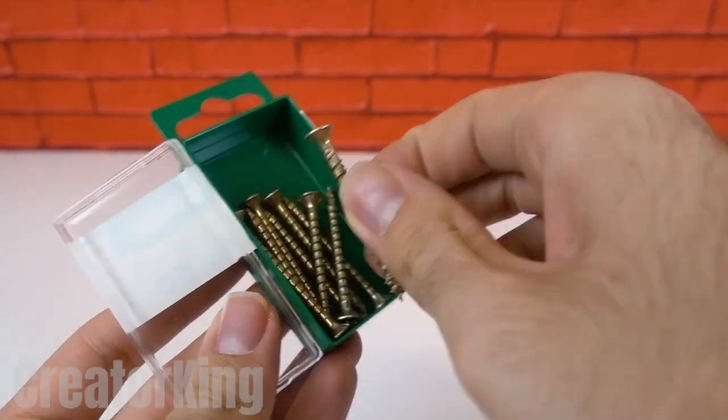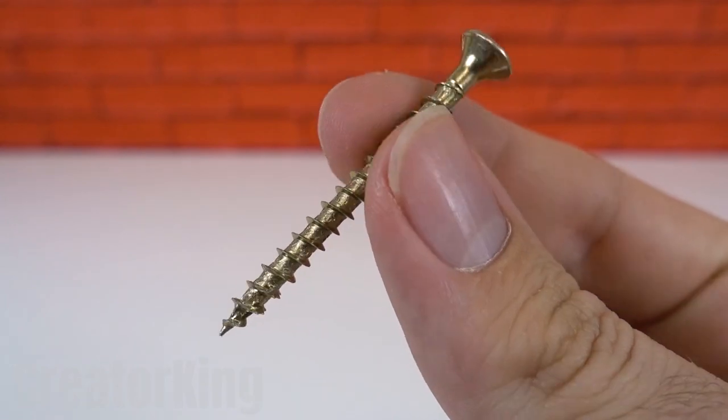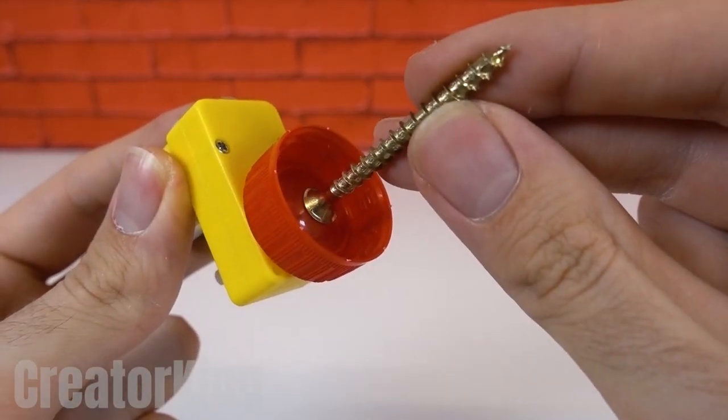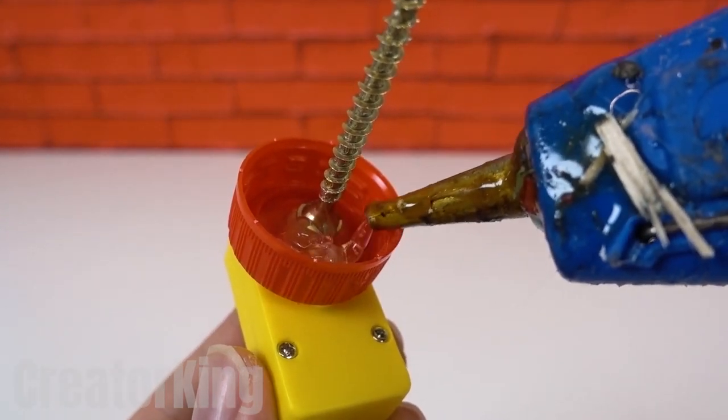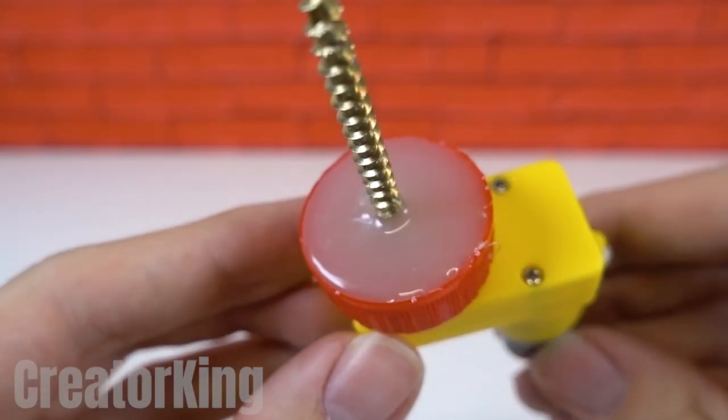One of these screws will be extremely helpful, if not one of the most important parts. Place the screw upside down in the lid and fill it with hot glue like a swimming pool.